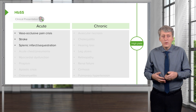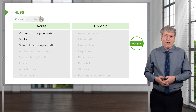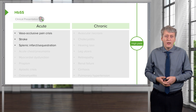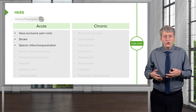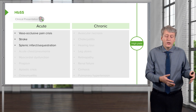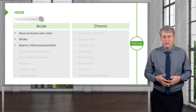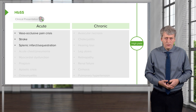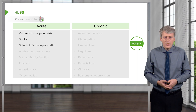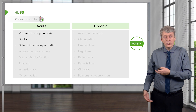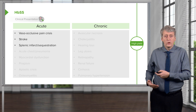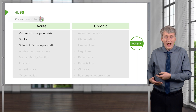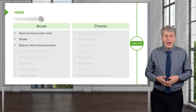It's common for patients to have an infarction of their spleen or splenic sequestration. This usually happens very early in life, in the first several years. These patients may develop a large spleen, but then eventually that spleen will contract down and be essentially ineffective.